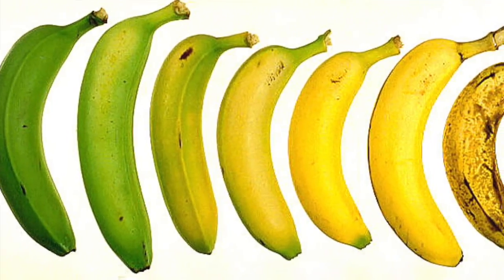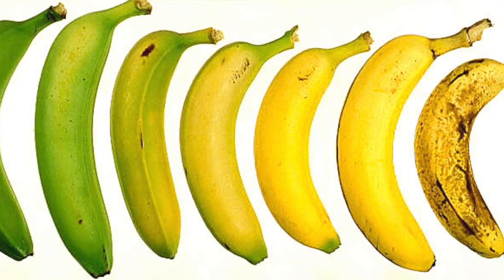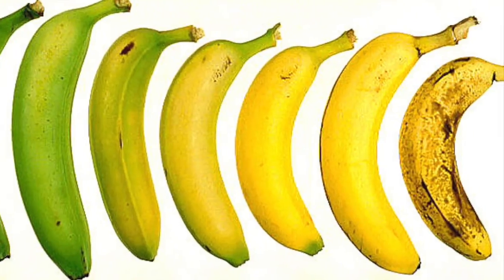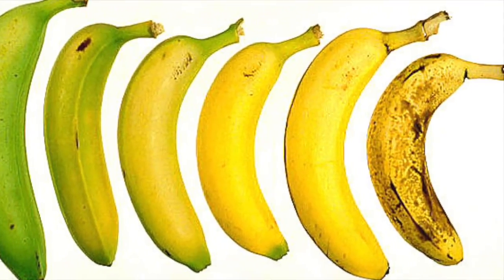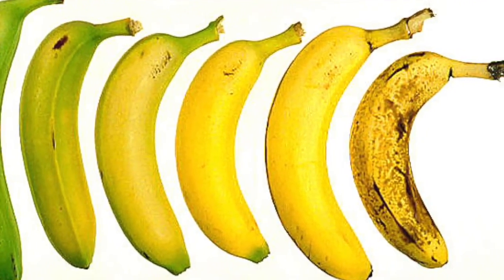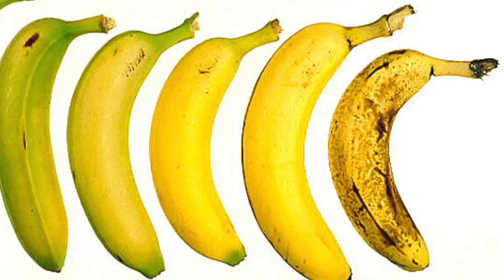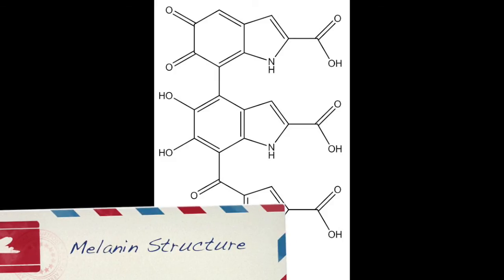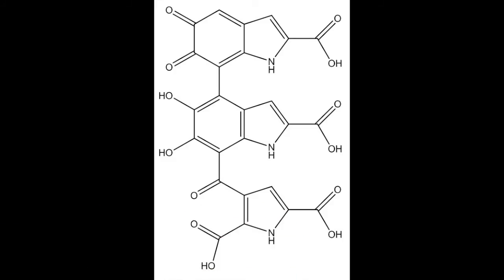Tyrosinase is also seen in the food industry, where it is one compound responsible for causing fresh fruits and vegetables to go bad and contributes to the brown color in plants. Tyrosinase is found in a variety of tissues. Notably, it can be found within the melanin pigments that it forms, which are found in melanocytes in skin, hair, and eyes in humans, and found in the flesh of many plants.